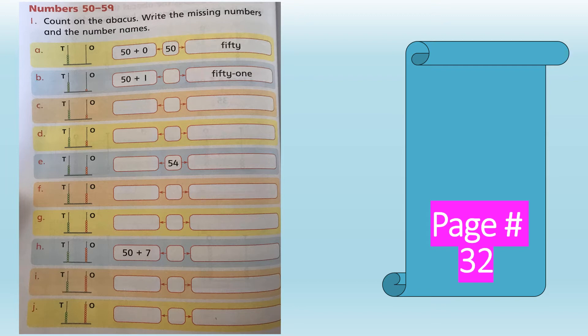Now look at part B on page 32. There is one red bead in the ones rod and five green beads in the tens rod. So five tens means fifty, plus one one, which makes fifty-one. The number name is F-I-F-T-Y, hyphen or space, O-N-E — fifty-one, 51. Now write the missing numbers and number names for parts C and D in the same manner.